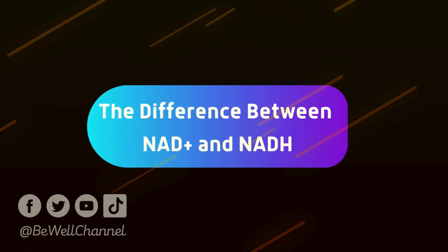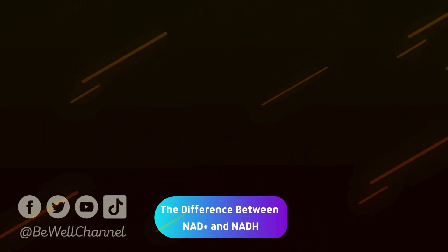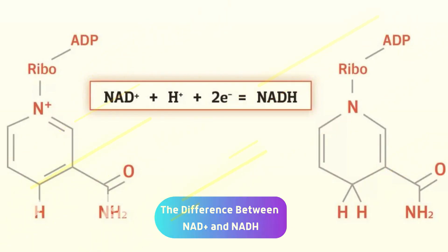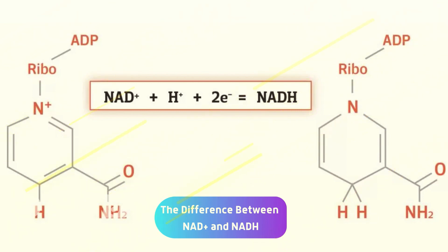The difference between NAD+ and NADH: there are two forms of NAD in the body — NAD+ and NADH. NAD+ is the oxidized form, and NADH is the reduced form, meaning it has a hydrogen molecule attached. NAD+ can receive an electron, whereas NADH has already regained an electron in the form of hydrogen.